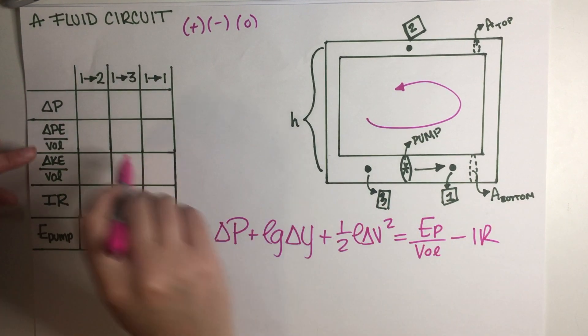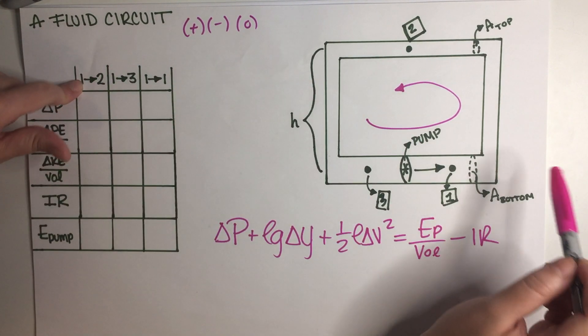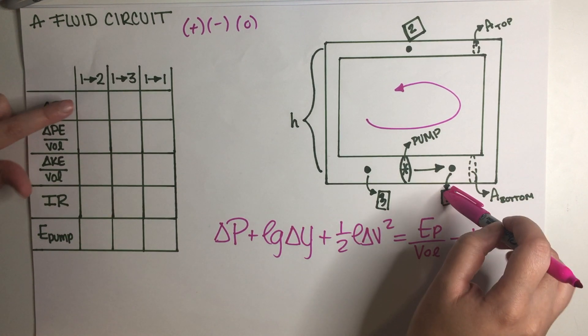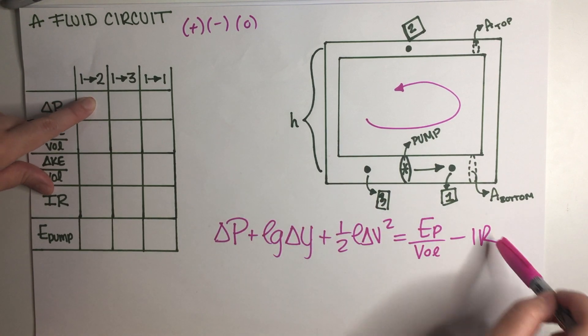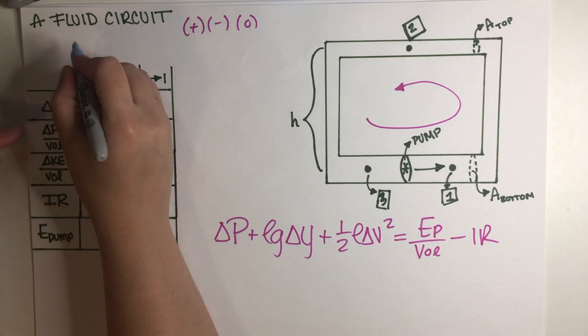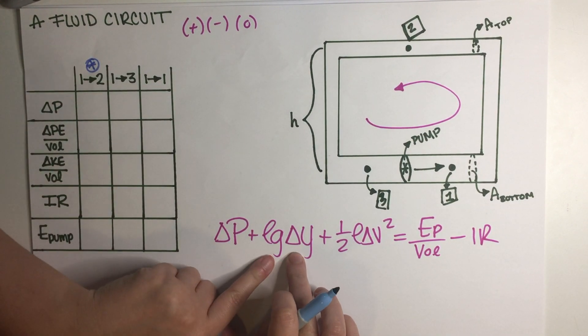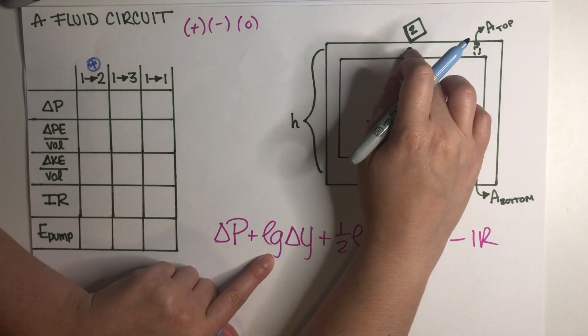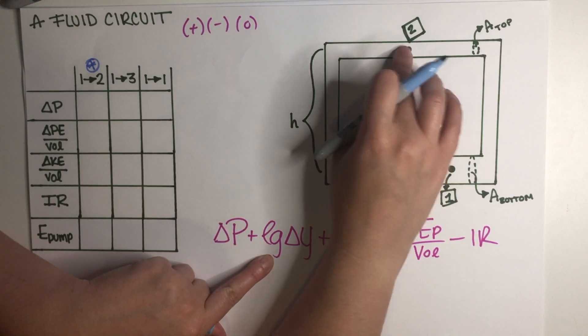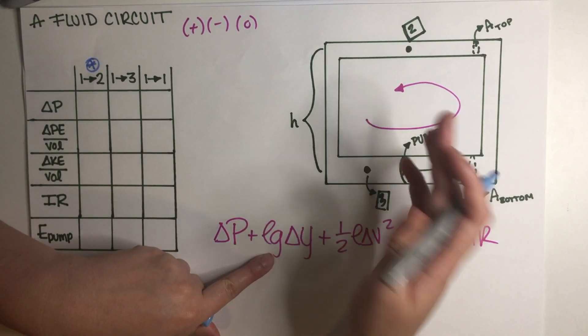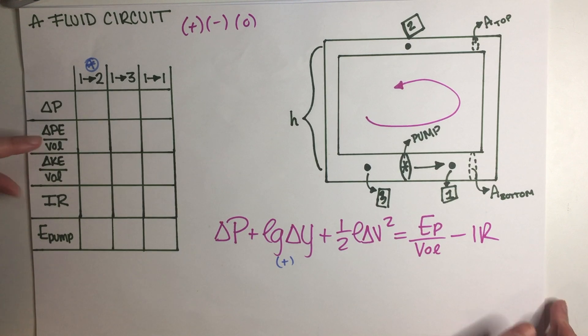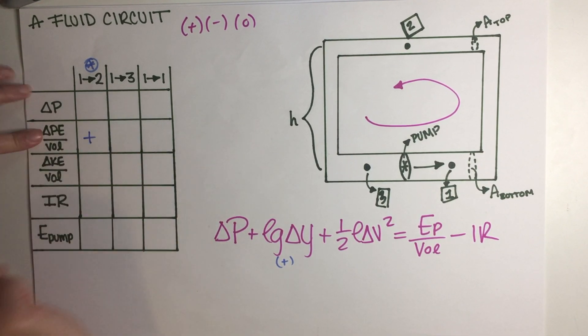Let's start with points one to two because that's the first thing that shows up here. Delta P, I can't say anything yet because I need to check out everything else. So going from one to two, which I'm going to use this color for, we do have a change in height going from here to here. This is at a higher altitude so delta y is positive because you went from the bottom to the top. So this would be positive here for delta PE.